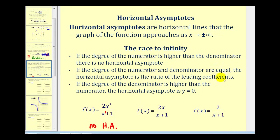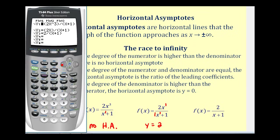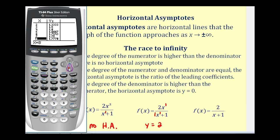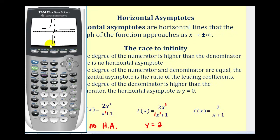If the degree of the numerator and denominator are equal, the horizontal asymptote will be the ratio of the leading coefficients. Looking at our second example, the numerator and denominator both have degree one, and the ratio of the leading coefficients is two over one. Therefore, the horizontal asymptote is y equals two. On the graphing calculator, turning on y2 and checking the table, we can see that as x increases the y value approaches positive two. Looking at the graph, as x approaches positive infinity or negative infinity, the y value approaches positive two.